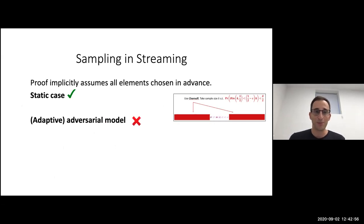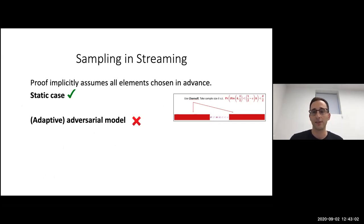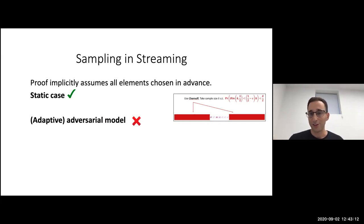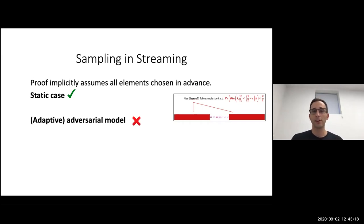What is the problem? The problem is this analysis assumes all elements are chosen in advance — this is exactly what Chernoff requires. Chernoff doesn't work on samples in the adversarial model. So now I'm going to specialize the adversarial definitions we had before to this specific setting of sampling — show you the model again with sampling in mind.